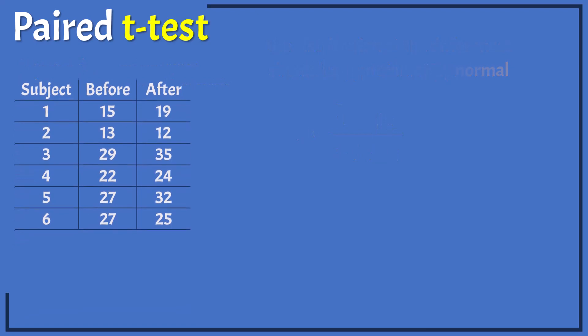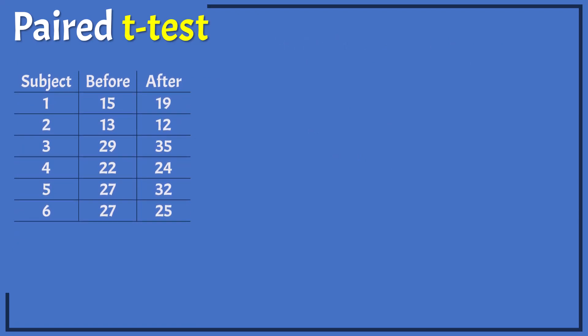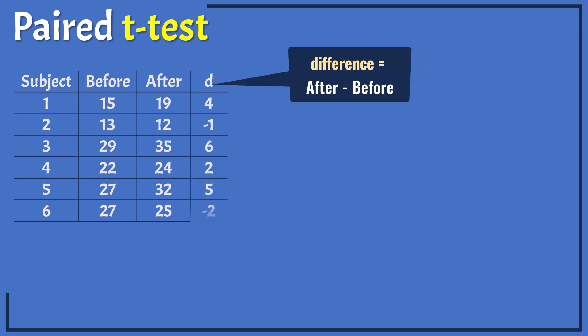We begin by taking the difference between each pair of scores. I'm going to do after minus before for the differences. Although it does not really matter for two-tailed tests whether we do after minus before or before minus after. However, in one-tailed tests, doing after minus before is recommended because it makes the hypothesis setup easier to understand.